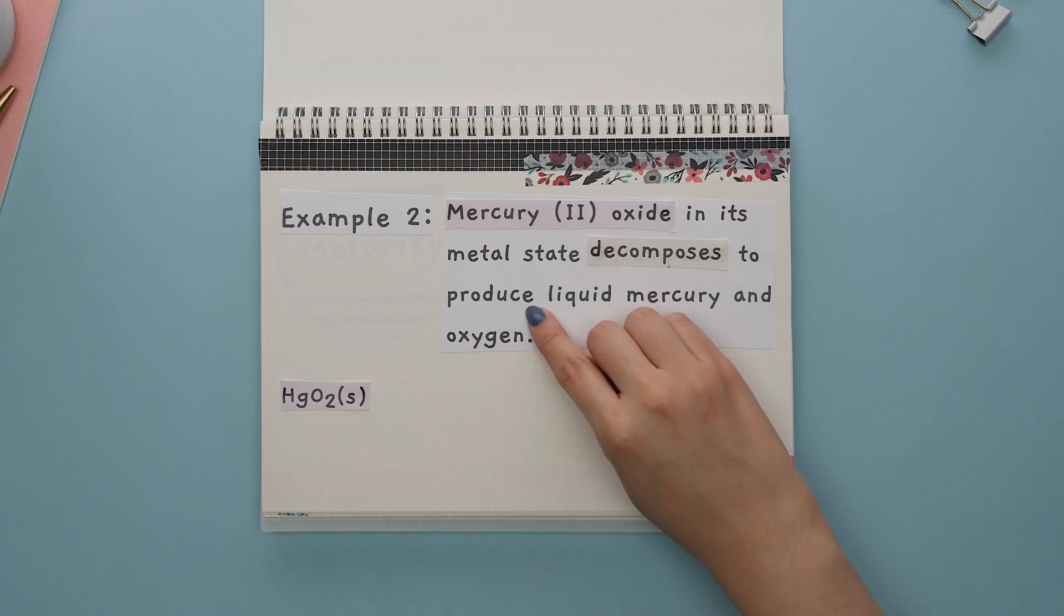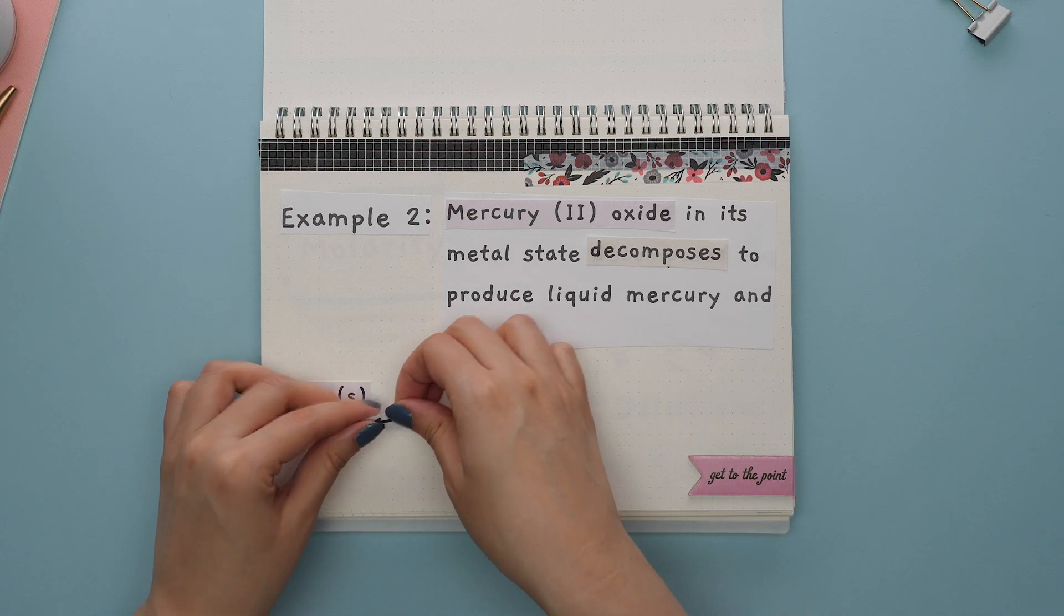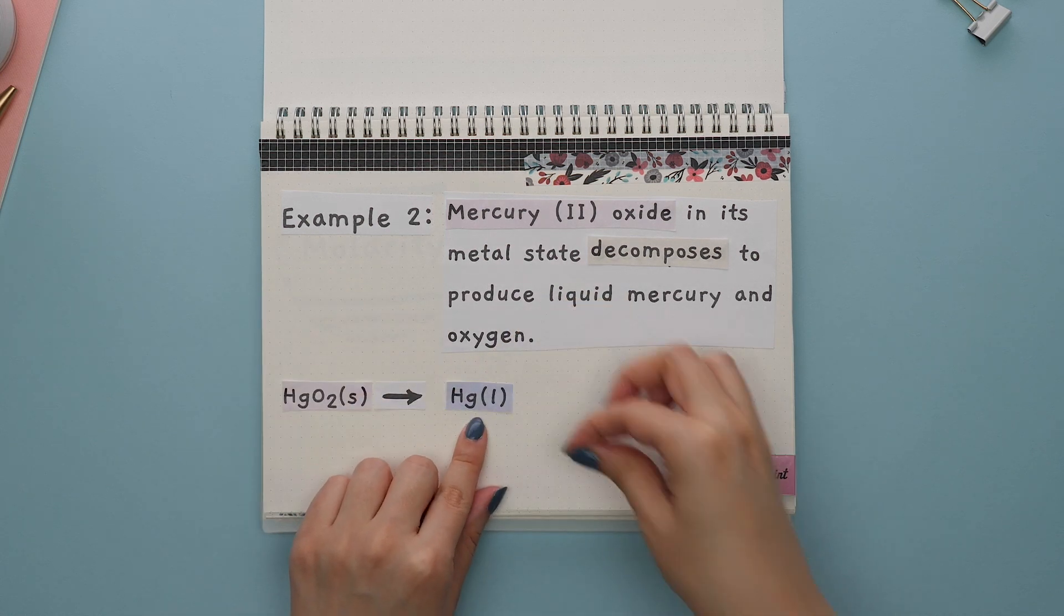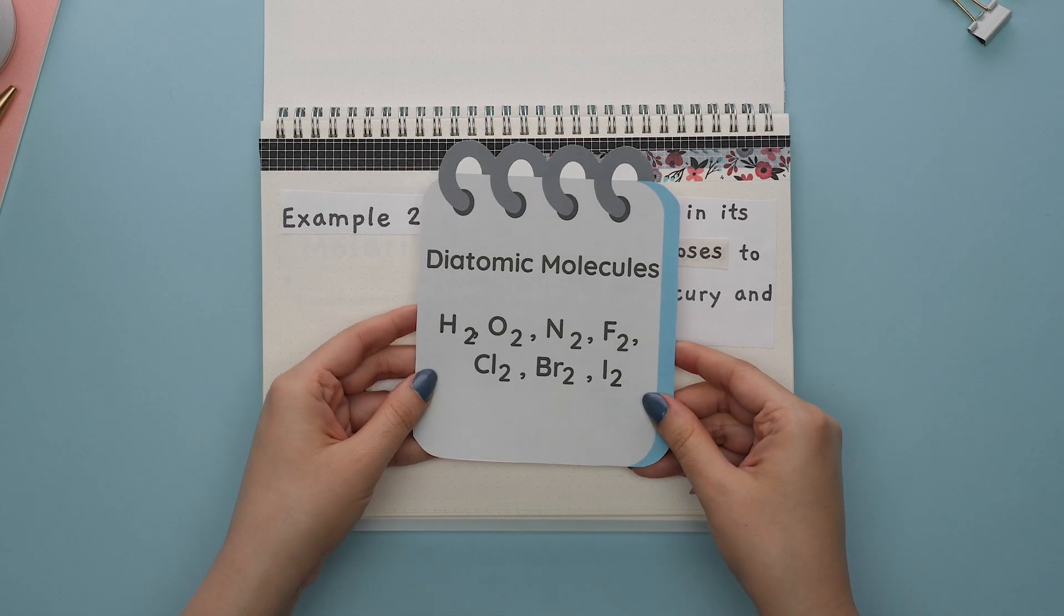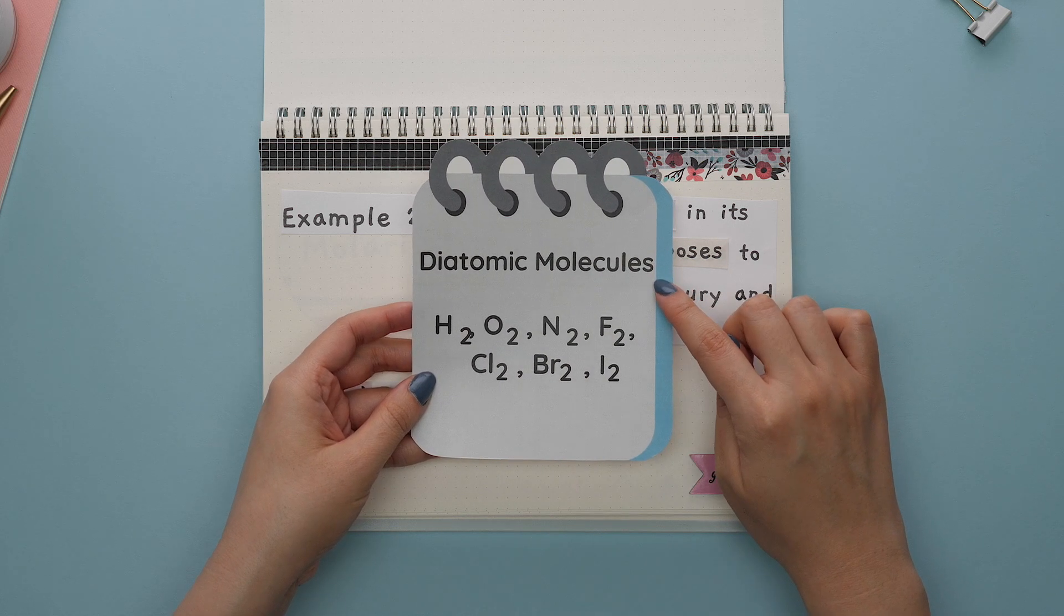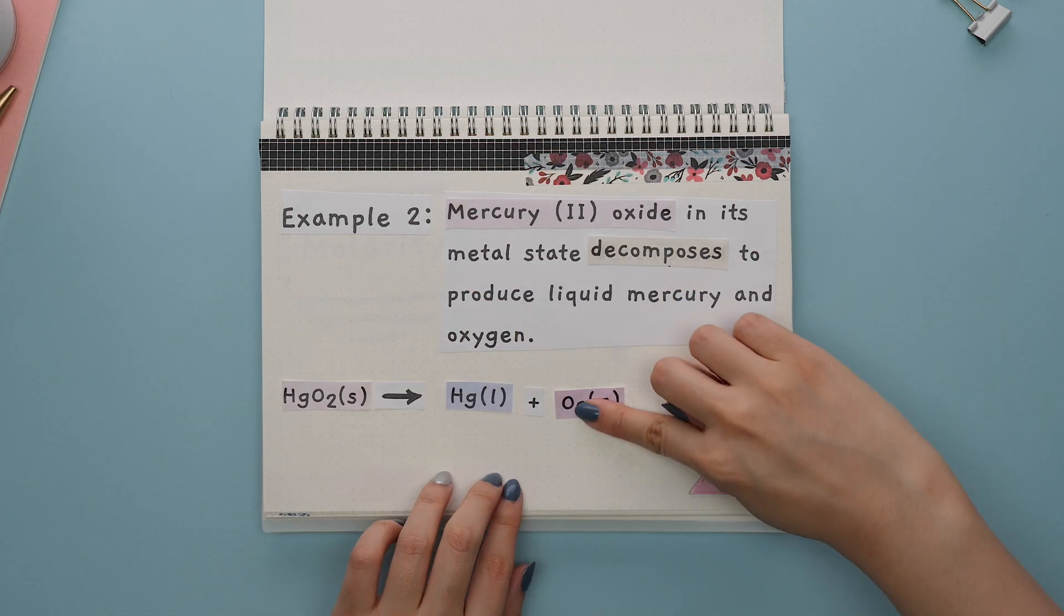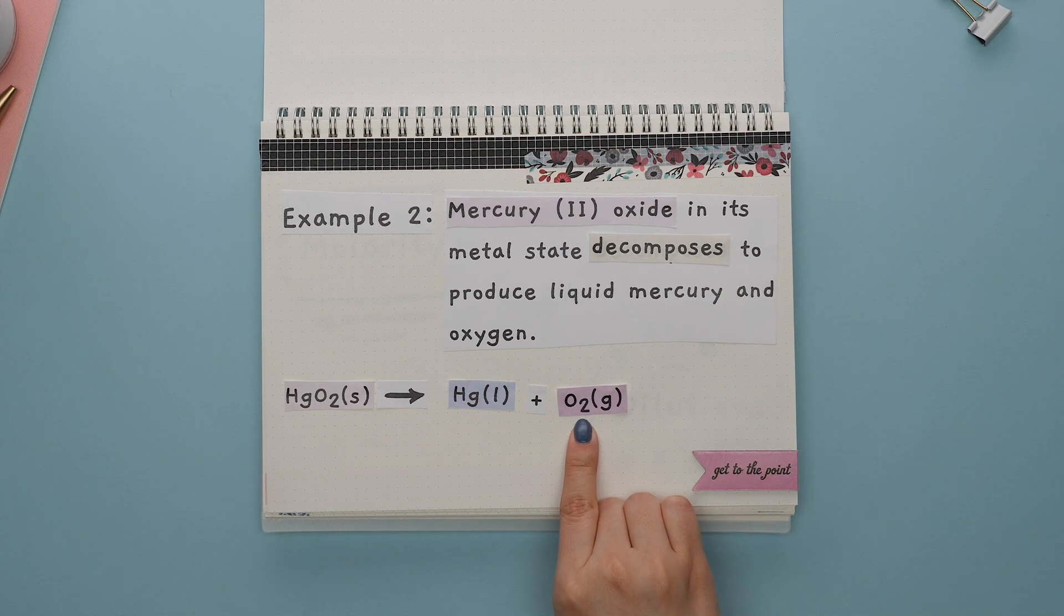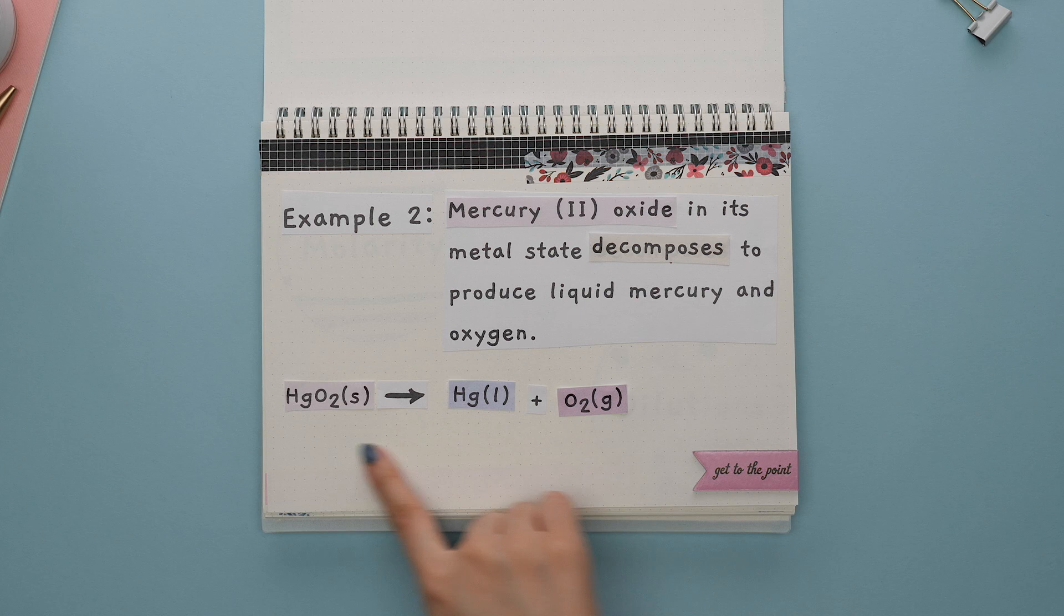Next, the word produce tells us that these are products. The mercury is in its liquid state. And remember that oxygen is a type of diatomic molecule, meaning it will not just look like this. Instead, it exists in pairs. So this is O2 and it is a gas. This is our balanced chemical equation.